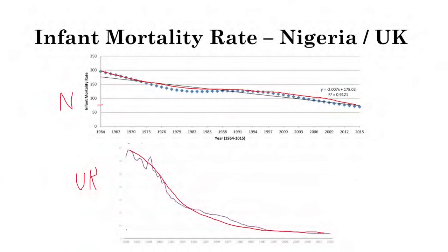Over time, as Nigeria develops, it can be expected to reach numbers like four, three, or two — just much further in the future. The UK is the hearth of the industrial revolution and had earlier access to industrialization, better healthcare, sanitation, food, water, and transportation — all before Nigeria did, which explains the exponential decrease in the UK. Nigeria is slowly gaining those advancements, so its infant mortality rate will continue to decrease.